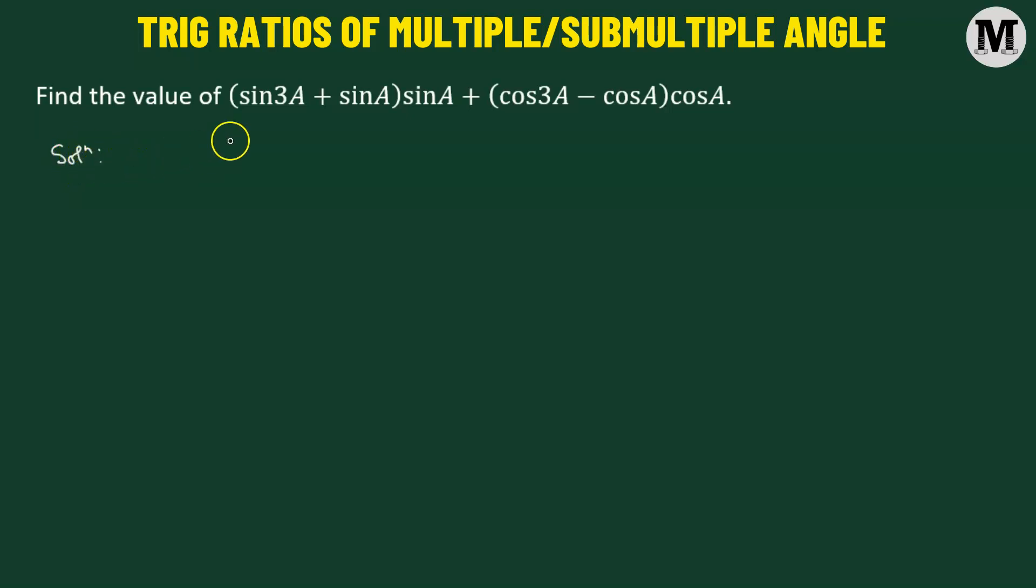Here we have the first term sine of 3A plus sine of A multiplied to sine A. So let's open the parentheses. We have sine of 3A multiplied to sine of angle A plus sine of A times sine of A, that will give us sine squared A.